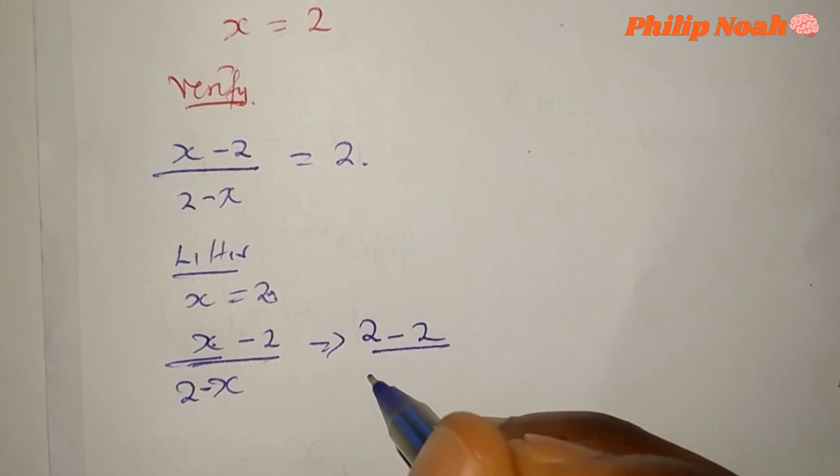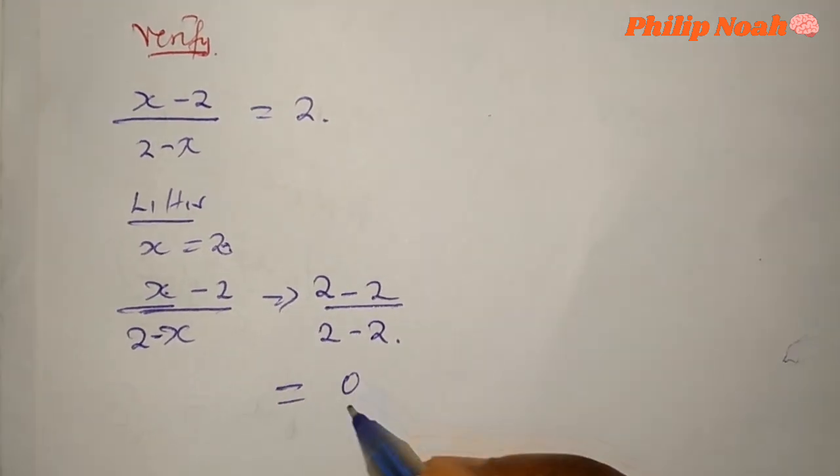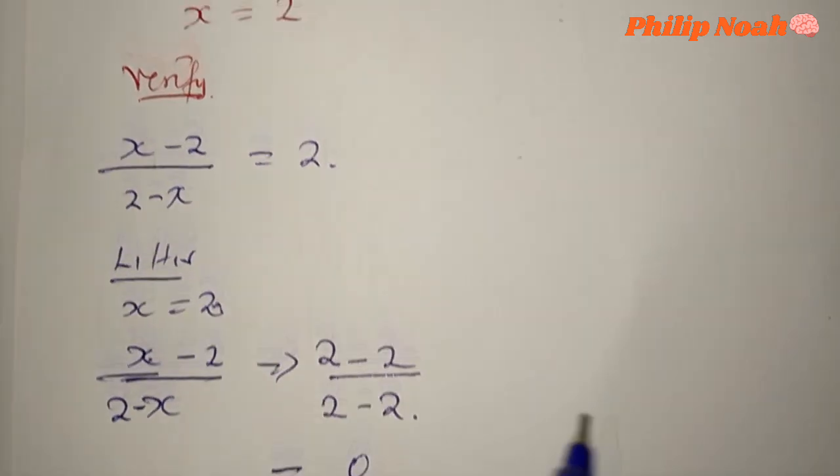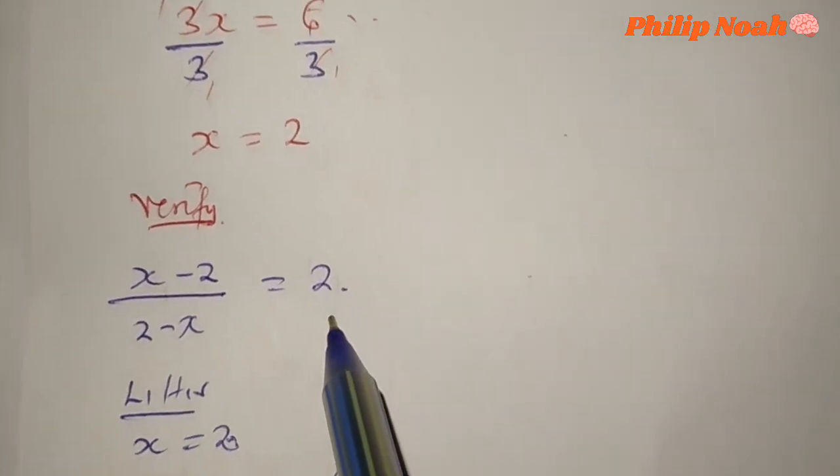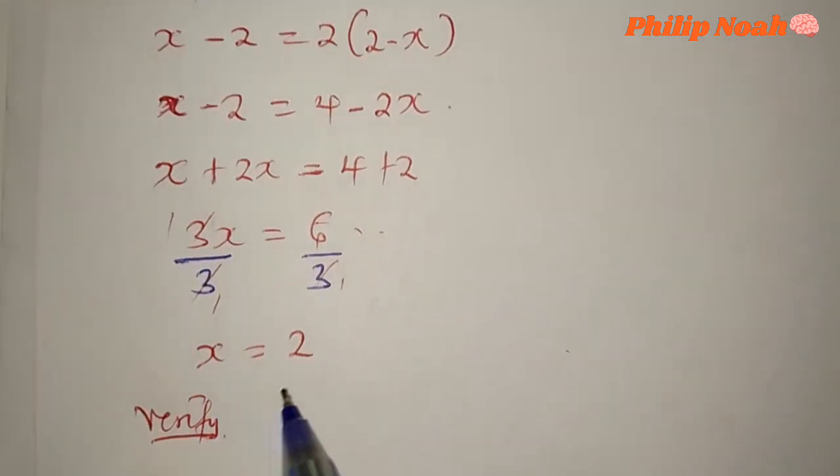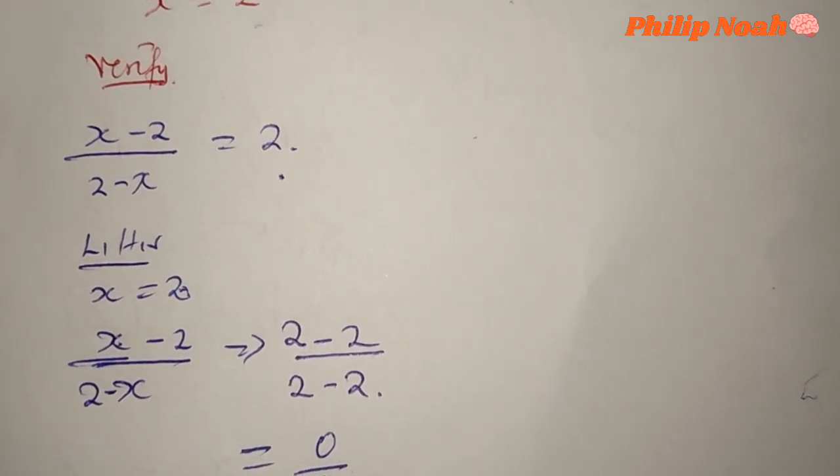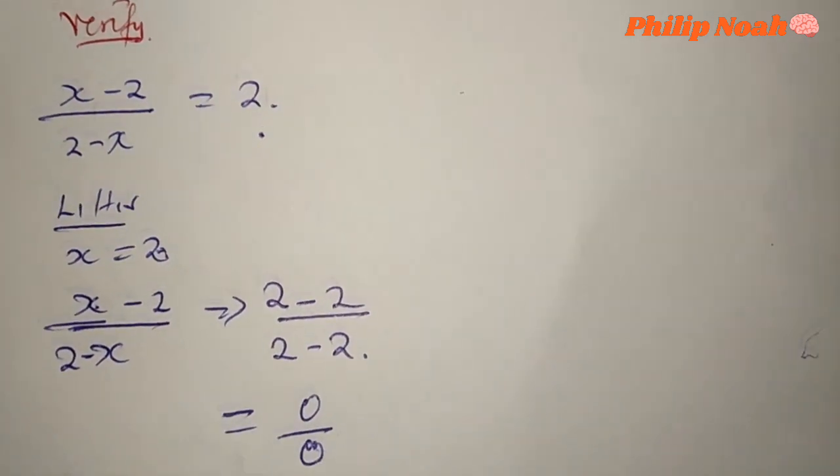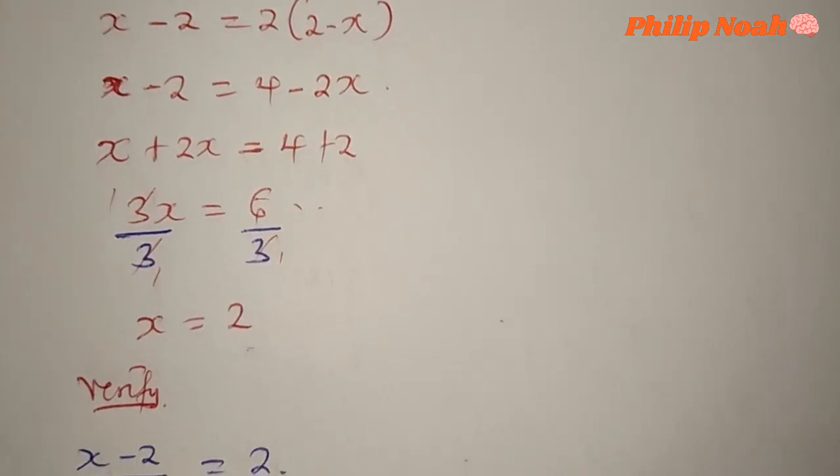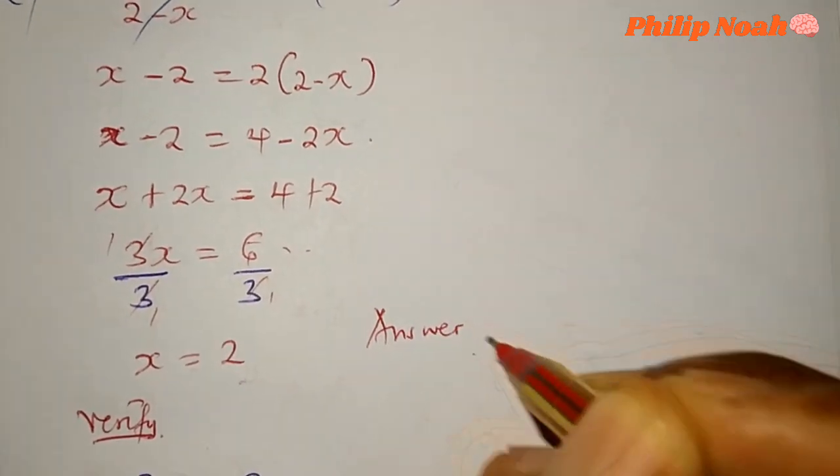This becomes 0 over 0. It's not giving us 2. Yes, we have gotten the value of x as 2, but it's not giving us 2 as we have substituted. So what does this mean? It means that there's no solution.